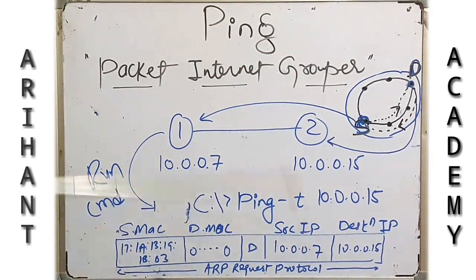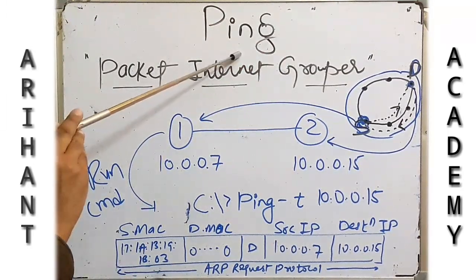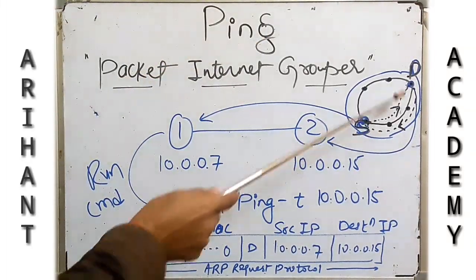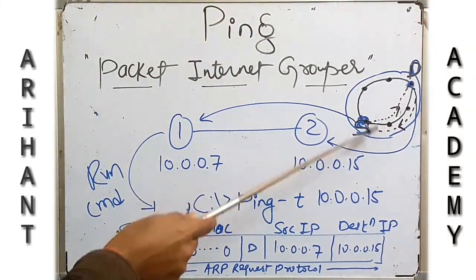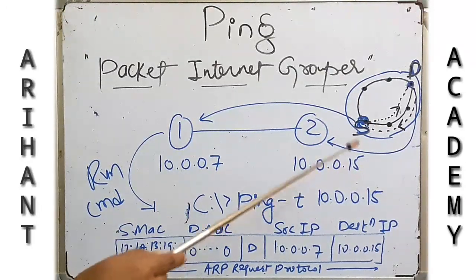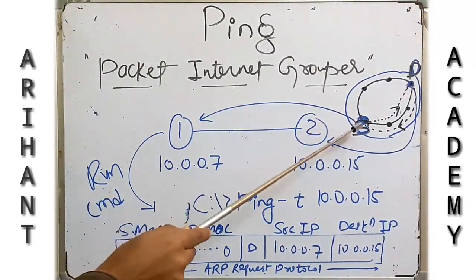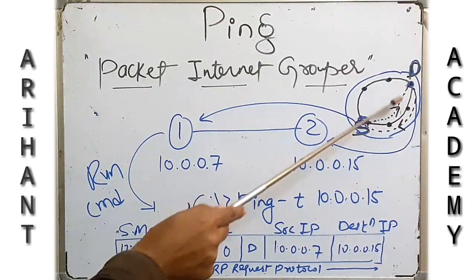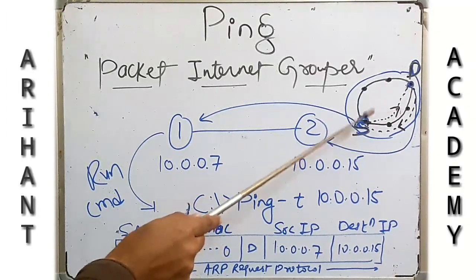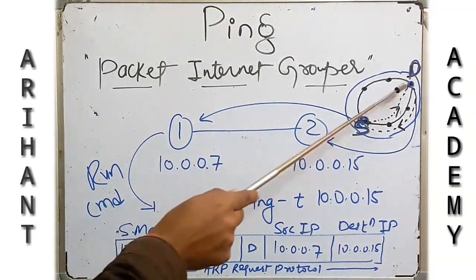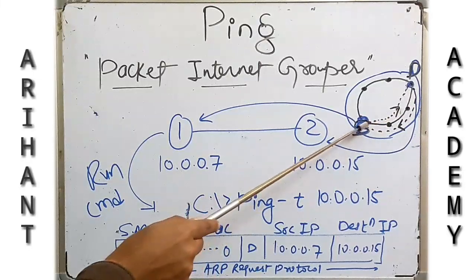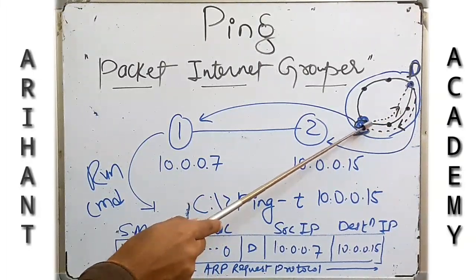PING is generally an internet program which is used to check whether any two IP addresses are connected in a network or not. Basically, suppose this is a source and this is a destination — whether this destination computer is connected to this source computer or not.